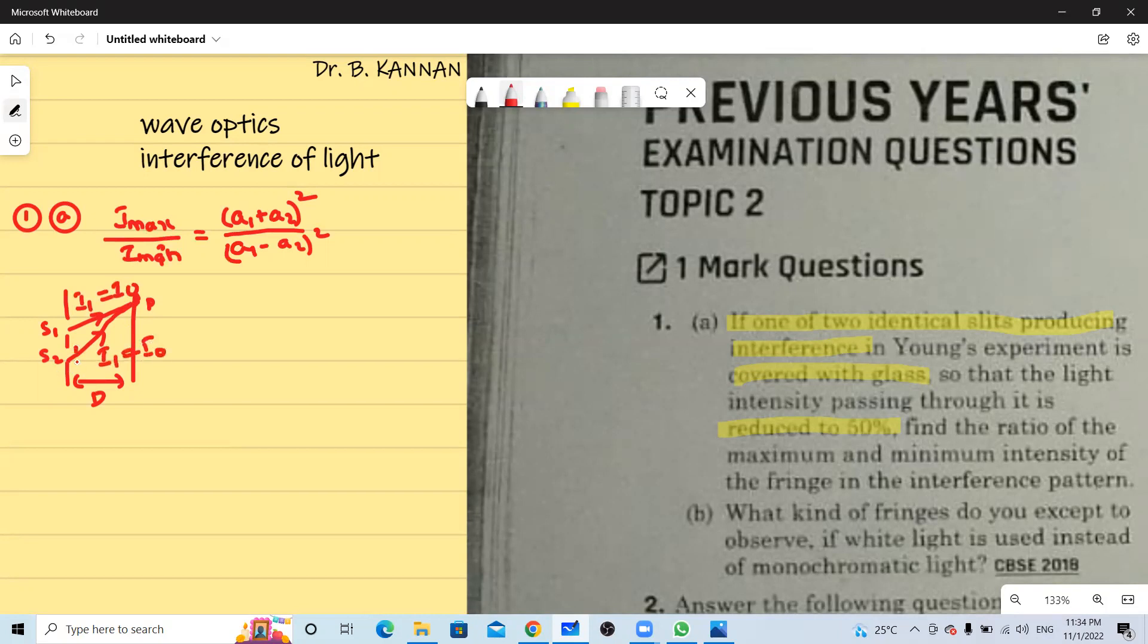But according to the question we are keeping a glass plate here because of this, this intensity is reduced to 50 percent of its initial value which means now the intensity becomes I naught by 2.